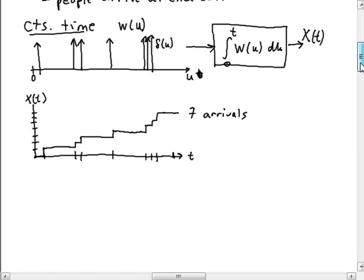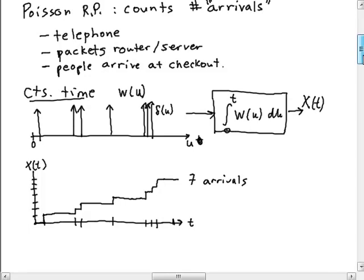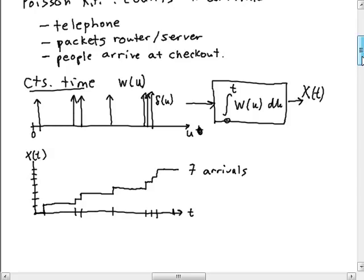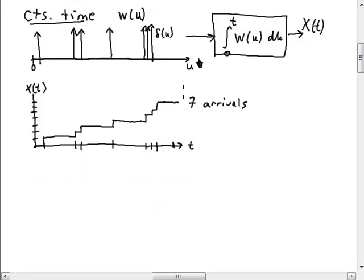This is how I get to my total of seven arrivals at the end of this plot. How am I going to figure out the PDF for the Poisson random process? At any particular time I want to know the probability mass function—I have to say probability mass function because the number of arrivals is a discrete set, a set of integers. So X(t) is continuous time and discrete valued.